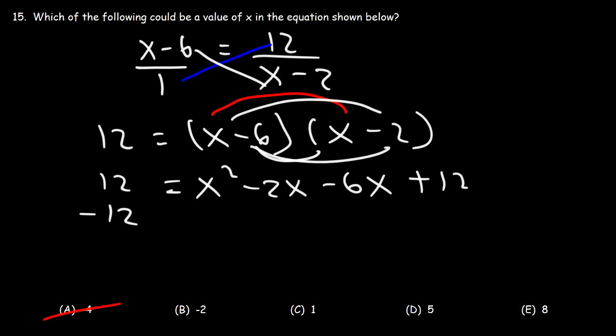Now, subtracting both sides by 12, we're going to have 0 is equal to x squared. And then we can combine these two. Negative 2x minus 6x is negative 8x.